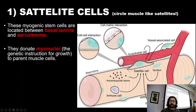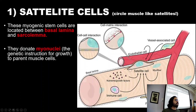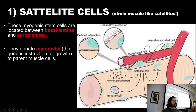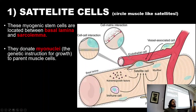Our muscle fibres have quite a lot of capillaries and blood vessels around them. The nutrients needed to grow the muscle — the amino acids needed for the protein aspect of the muscle — are taken from our diet through our digestive system and into our circulation, delivering them to the muscle itself.